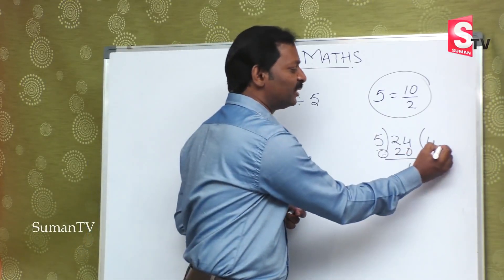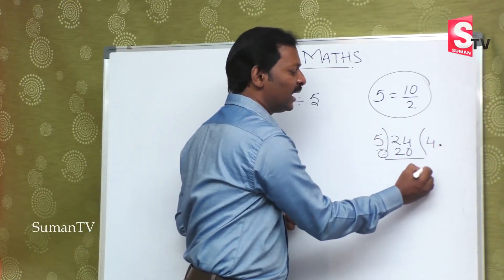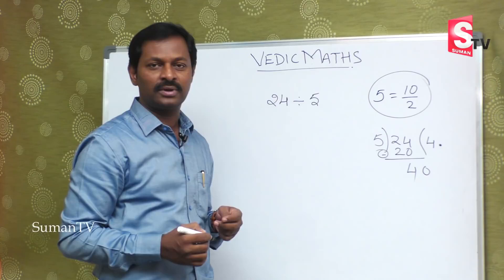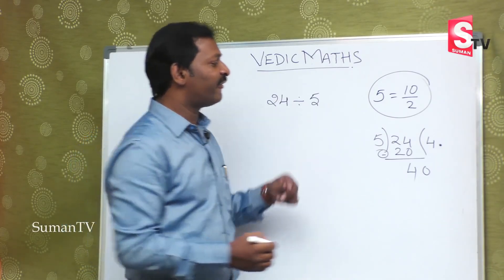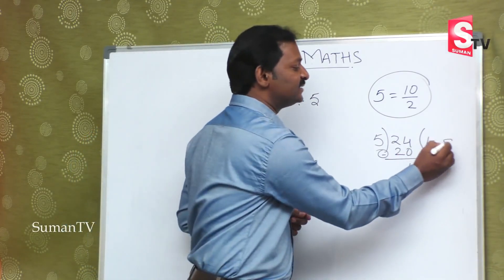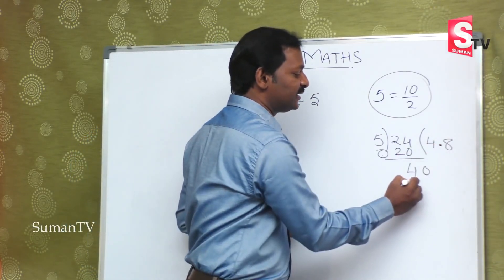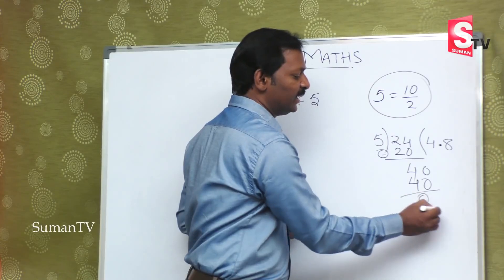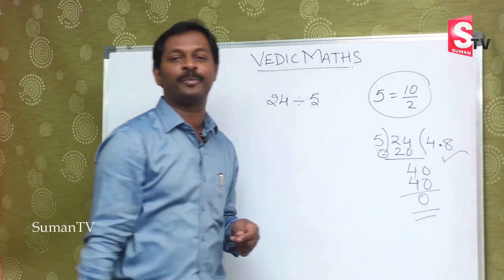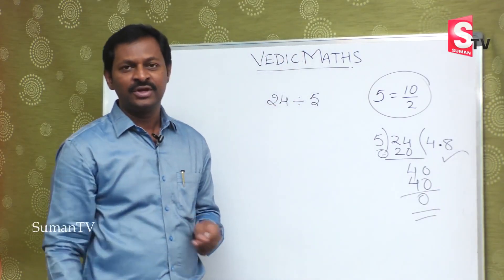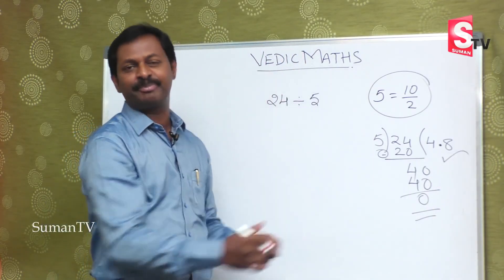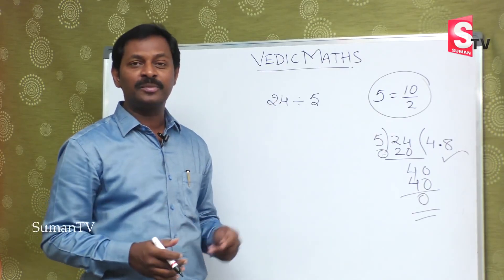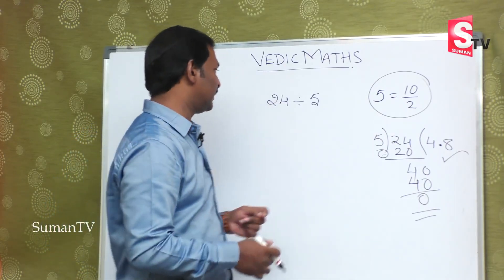We put a decimal point here and take a zero. Now five eights are forty — the balance is zero. So the answer is four point eight. That is a lengthy process.